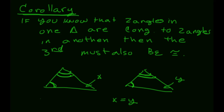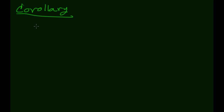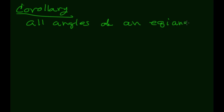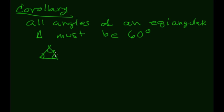The second corollary: all angles of an equiangular triangle must be 60 degrees. This is because the three angles are all equal and they all add up to 180, so three times the measure of each angle equals 180, meaning each angle must be 60 degrees.